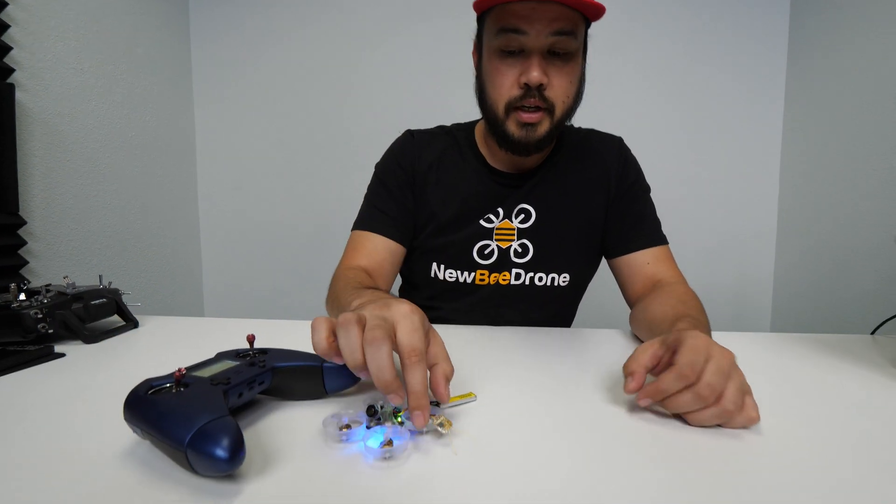Now that that's ready for bind, I'm just going to go in here and press the bind button. Once I press the bind button, it'll go to the police lights, then you hit bind on your transmitter. Go ahead and telemetry on. Bind that.